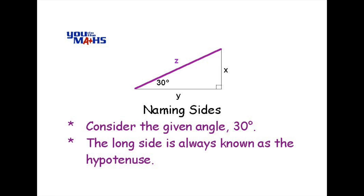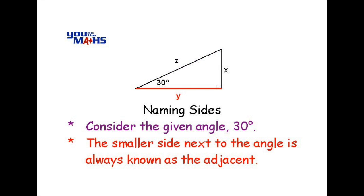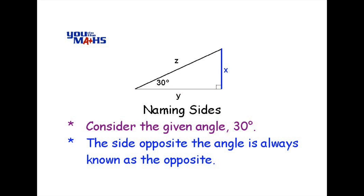Of the two smaller sides, the one that's next to the given angle — in this case the one in red called Y — is called adjacent, because it's next to the 30 degrees, and adjacent means next to. The side labeled X is called the opposite side because it's away from the angle and doesn't actually touch the 30-degree angle.